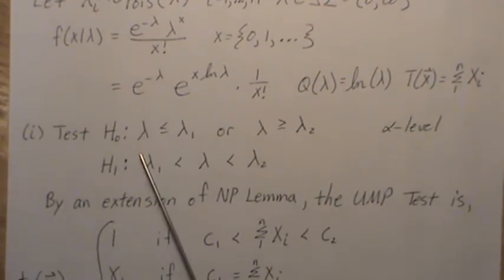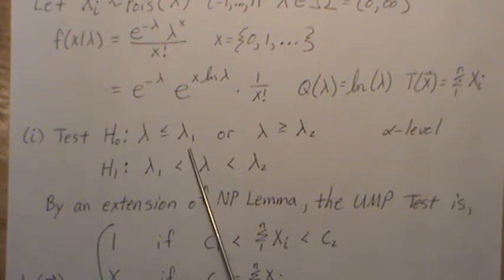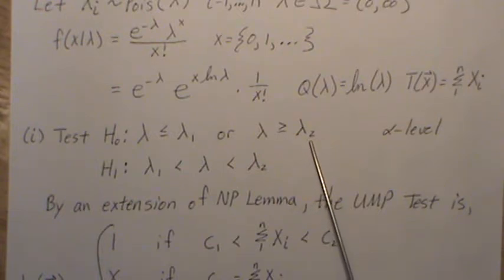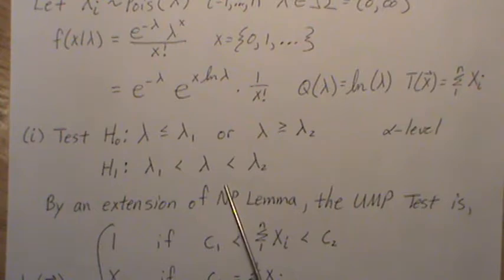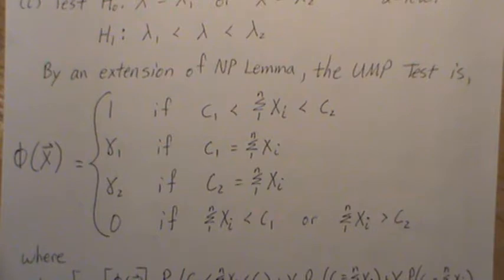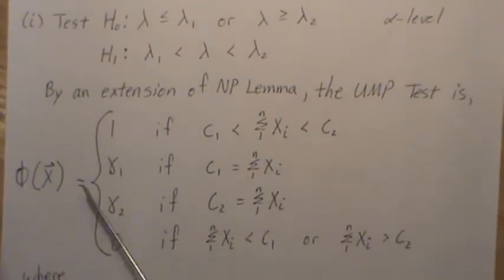Now the null hypothesis is that lambda is less than or equal to some value lambda 1 or it could be greater than or equal to some value lambda 2. The alternative is that it's in between those values. This is an alpha level test and as mentioned earlier this is really just an extension of the Neyman-Pearson lemma.